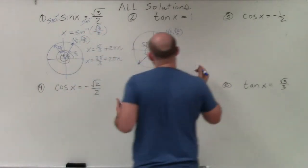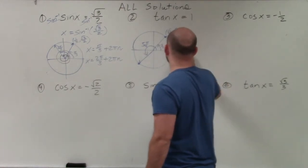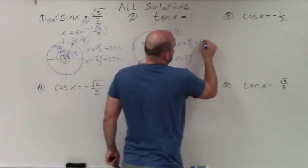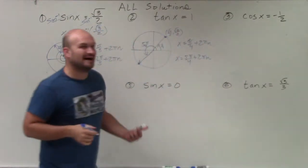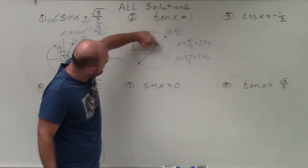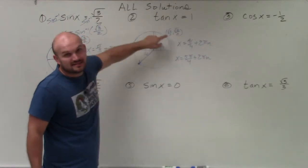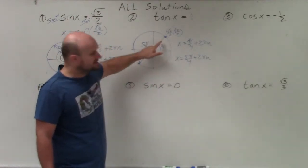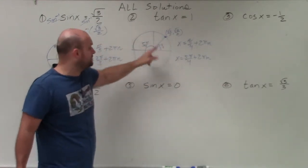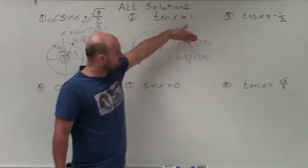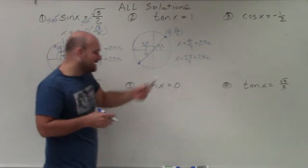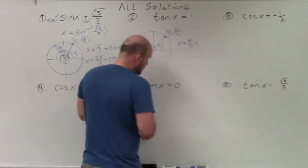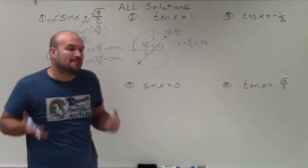When writing the solutions, rather than listing pi over 4 and 5 pi over 4 with 2 pi n each, notice the distance between pi over 4 and 5 pi over 4 is exactly pi — halfway around the circle. So if I take pi over 4 and add pi, I get 5 pi over 4. Add pi again, I come back to pi over 4. By continually adding pi, I hit all solution angles. So I can simplify by writing just x equals pi over 4 plus pi n.